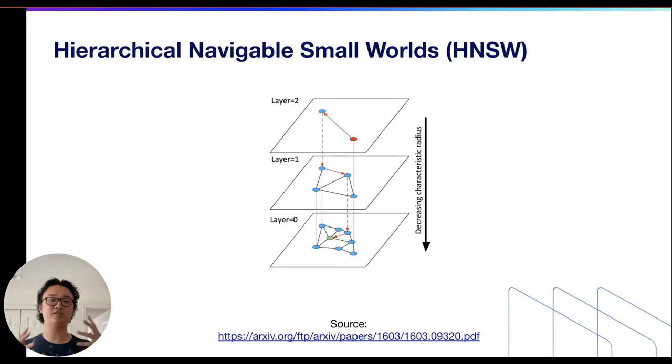And the way this works is, at index time, as each data point is being inserted into the graph, a uniform random variable is generated. And based on that variable, based on that number, the data point will either go into layer 0, or the layer above it, or the layer above it, with each layer being generated as needed.